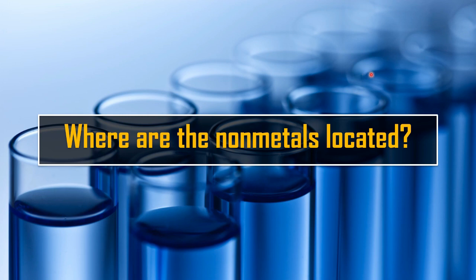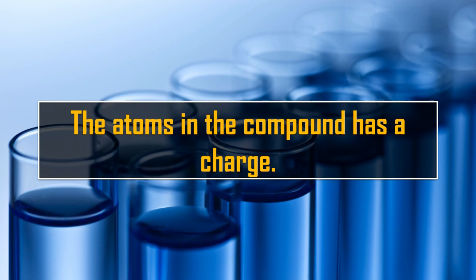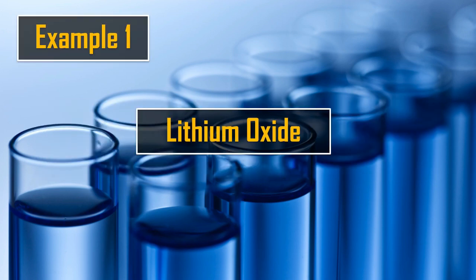Non-metals are located on the far right portion of the periodic table, except for hydrogen. The atoms in a compound have a charge — either negative or positive — and they also have a numerical value. To know the charge of a specific element, you can use your periodic table. There is also a shortcut or an easy way for you to identify the charge of an element.